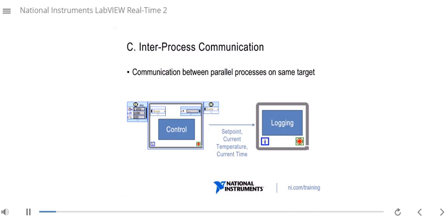When we talk about inter-process communication, this means communication between parallel processes on the same target. In LabVIEW, that typically means talking from one loop to another. In the case of this example, if we had a control loop that was our time-critical loop running in a timed loop, and it needs to send certain data over to a low-priority logging loop implemented in a while loop.